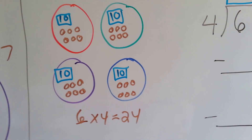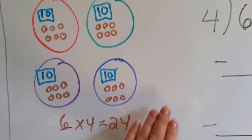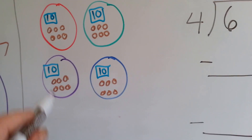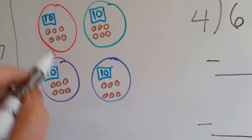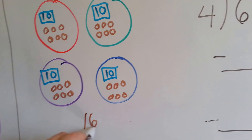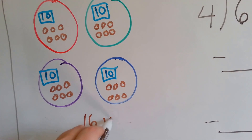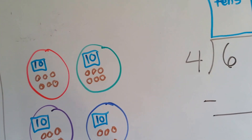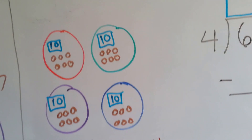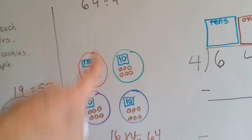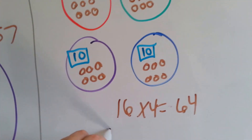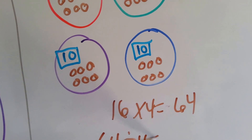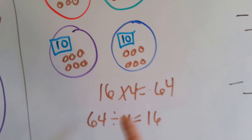How many cookies does each person get? They're each going to get ten and six, which is sixteen. Sixteen times four equals sixty-four. So sixty-four divided by four equals sixteen.